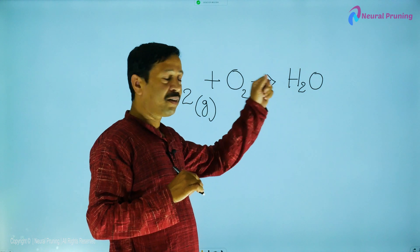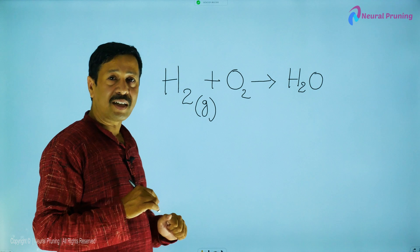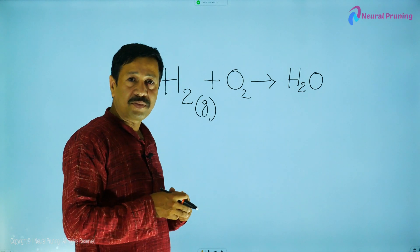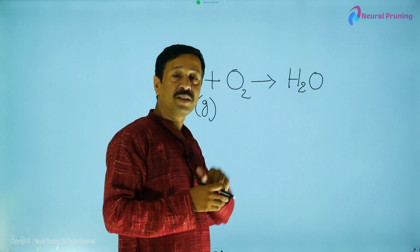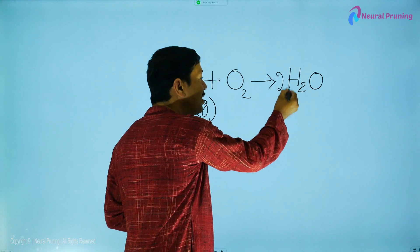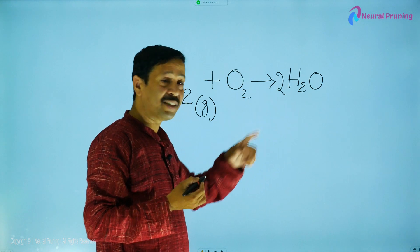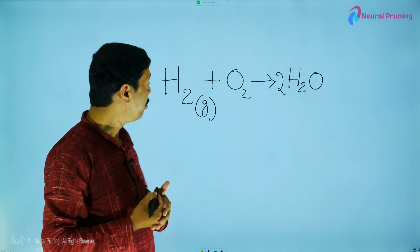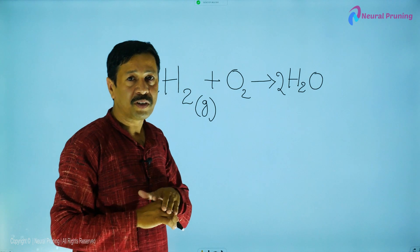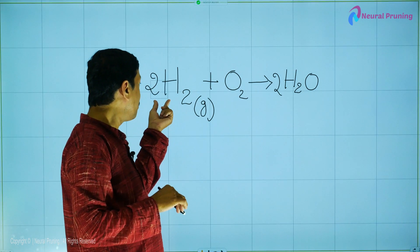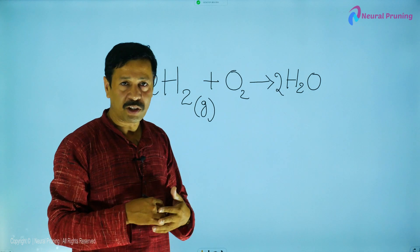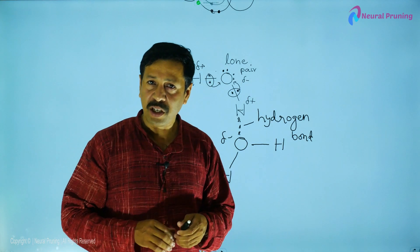Two atoms of hydrogen are on the product side, and on the reactant side there are also two atoms of hydrogen, so they are balanced. For oxygen, two atoms are on the right side but only one atom is on the left, so you write a coefficient of 2. This doubles the hydrogen to 4, so you write 2 on the reactant side as well. This is the symbolic representation: 2H₂ + O₂ → 2H₂O — two molecules of hydrogen combine with one molecule of oxygen to produce two molecules of water.